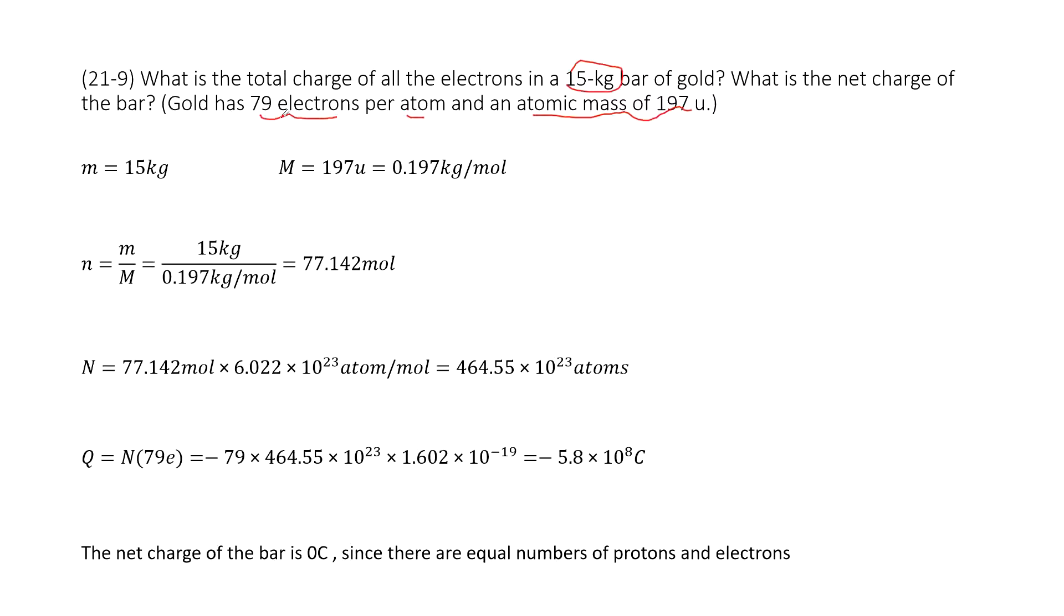We write down the given quantities. The mass of the object is given. And the atomic mass is given 197u, which you can convert to 0.197 kg per mol. In this way, you can get the mol number of these gold atoms. Using the total mass divided by the atomic mass, you get the mol number of the gold atoms.